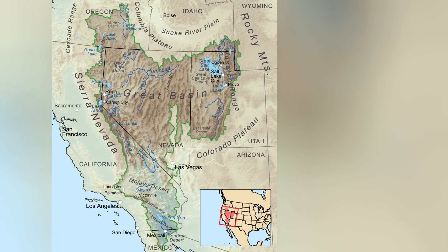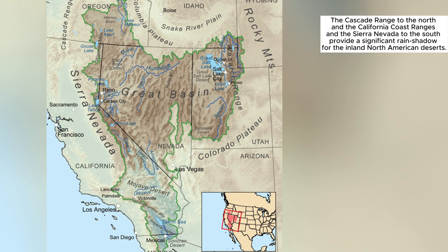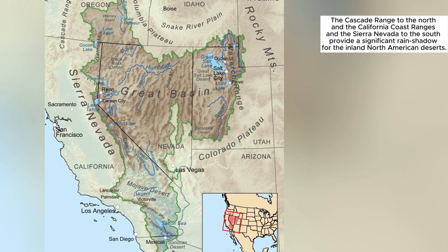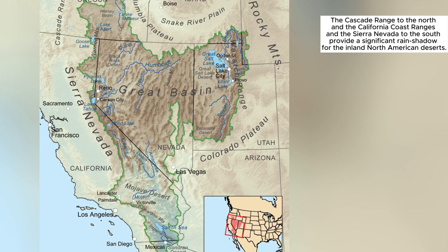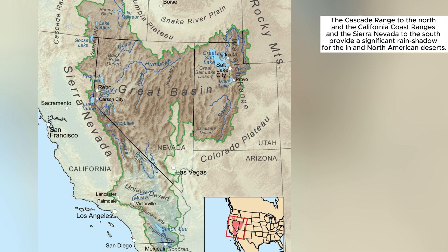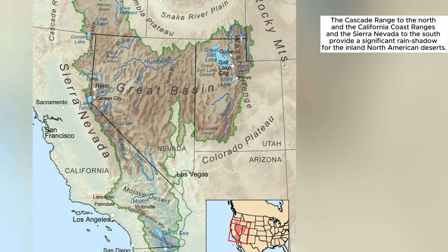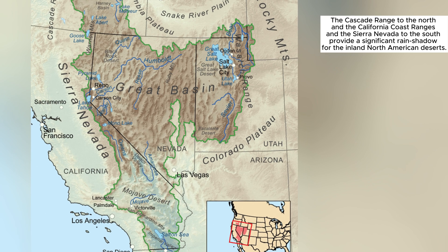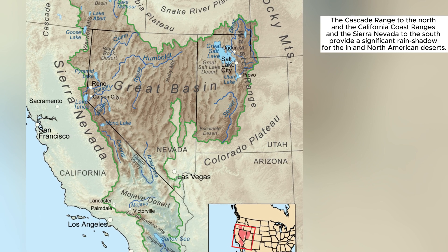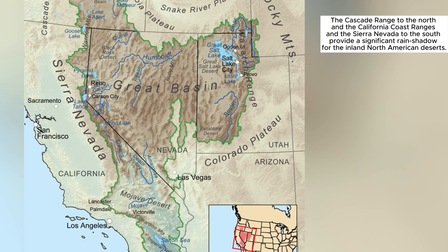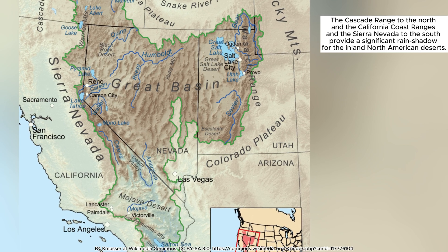This phenomenon, known as the rain shadow effect, is responsible for deserts like the Mojave and Great Basin in North America. Here, mountain ranges like the Sierra Nevada trap the moisture from the Pacific, leaving the inland areas dry and barren.